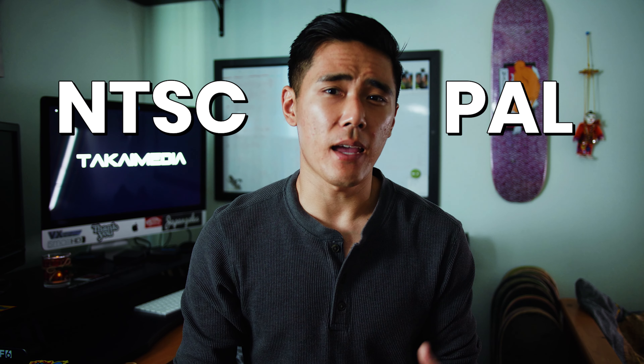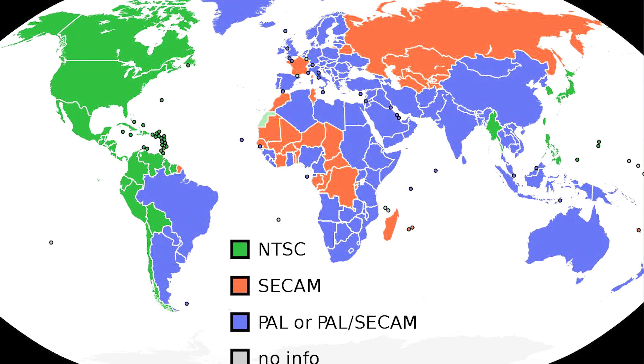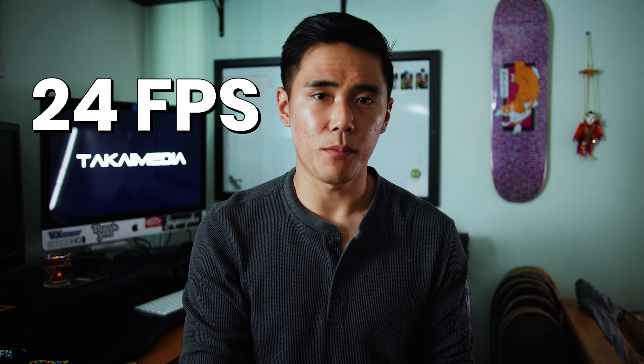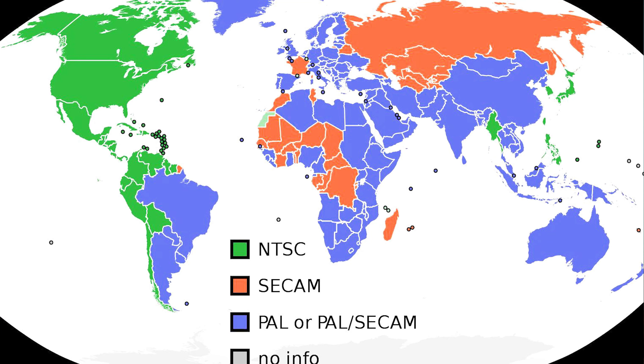Another thing to keep in mind is the NTSC or PAL broadcast standards. These are just different broadcast settings for whichever part of the world you live in, and this will determine whether you shoot in 24 or 25 frames per second. If you live in a country under the NTSC standard you'd use 24 fps, and if you're in a PAL country you'd use 25 fps.